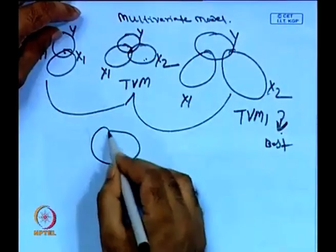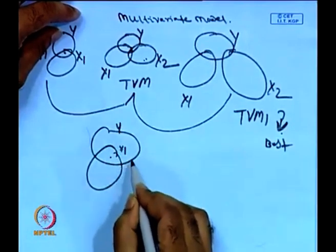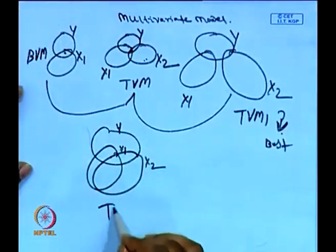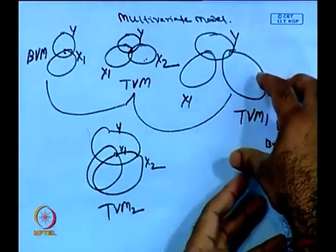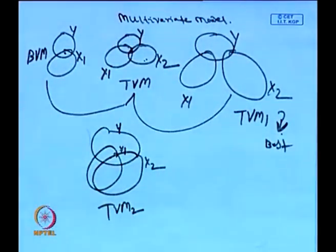If by any chance there is such a relationship between X1 and X2, then ultimately the complexity will start increasing. I will take another case. This is Y, this is X1, and this is X2 — this is another trivariate model. You see here: this is one different problem, this is another different problem, and this is altogether another problem.